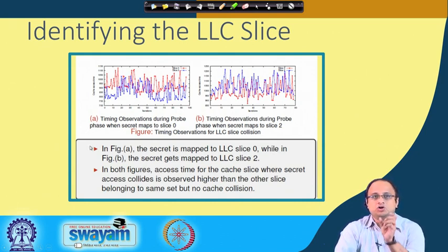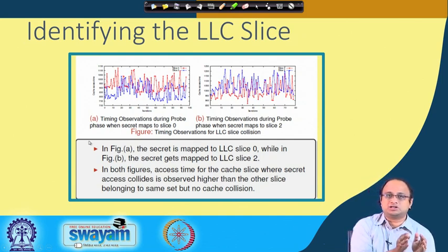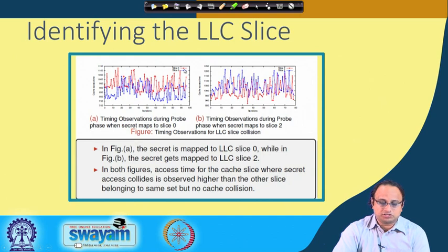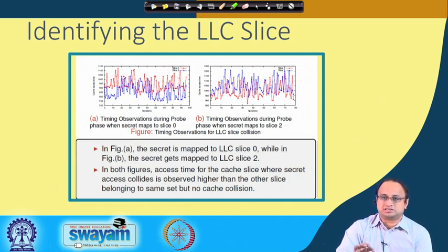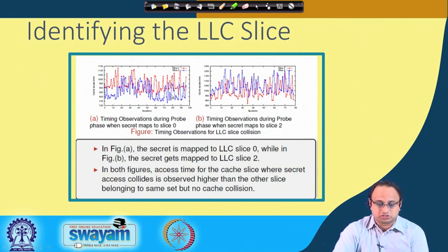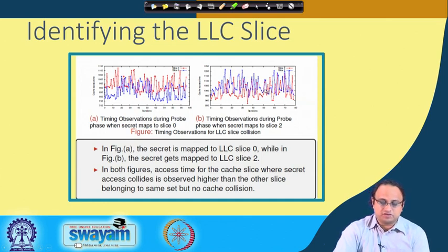At this point we still have 48 possible address locations. You can make this more concentrated by also identifying the slice, using those 2 hash functions. In one slice, for every cache set there are m possible ways. Here is an example considering 2 slices: in figure A the secret is mapped into LLC slice 0, while in figure B the secret is mapped into LLC slice 2. When mapped into slice 0, slice 0 indeed takes more time compared to slice 2, and vice versa — confirming that the reverse-engineered hash functions for slice computation are working as expected.